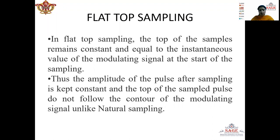In flat top sampling, the top of the samples remain constant and equal to the instantaneous value of the modulating signal at the start of the sampling. Thus, the amplitude of the pulse after sampling is kept constant and the top of the sample pulse does not follow the contour of the modulated signal, which is usually done in natural sampling.